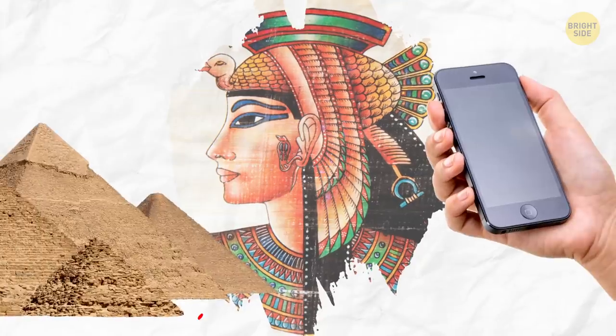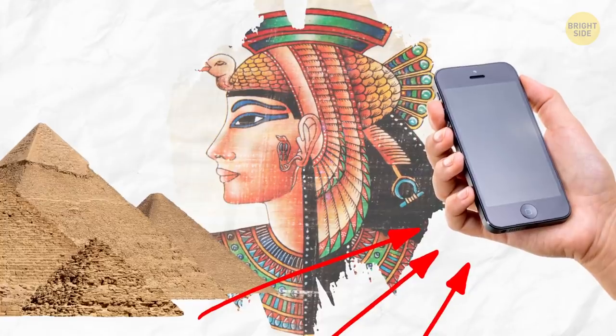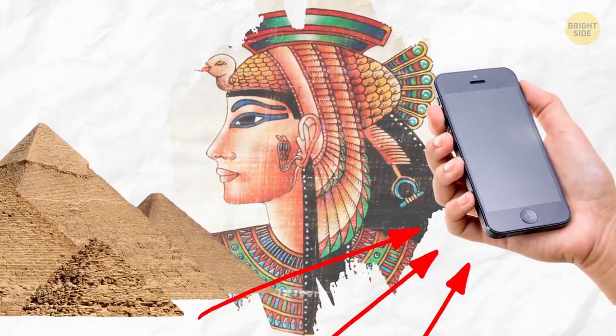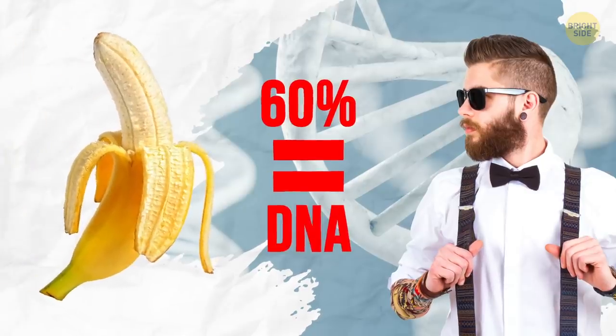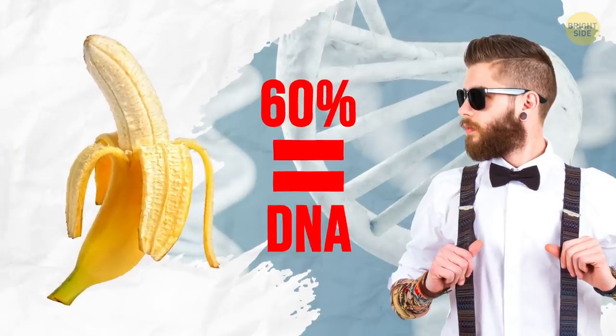Cleopatra lived closer to the release of the first iPhone than to the building of the Great Pyramids. It's true. The structure of human DNA matches that of a banana by 60%. And we both hang out in bunches.